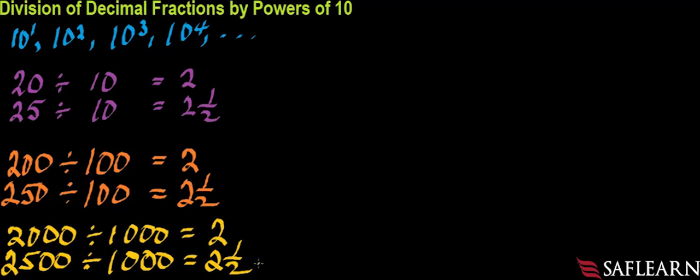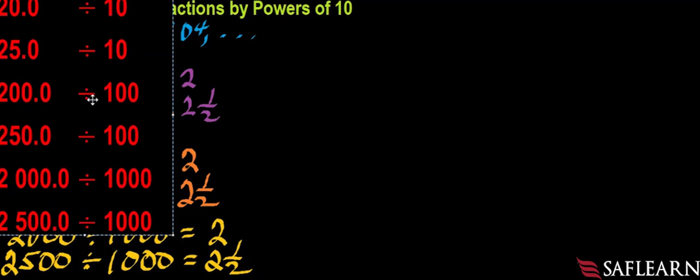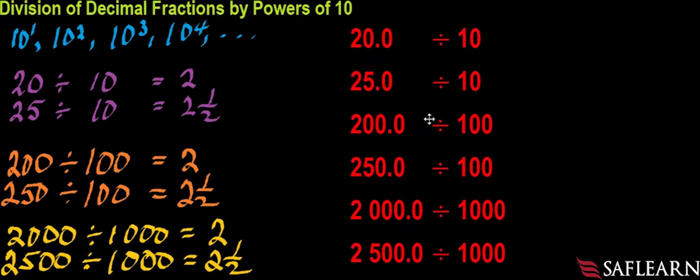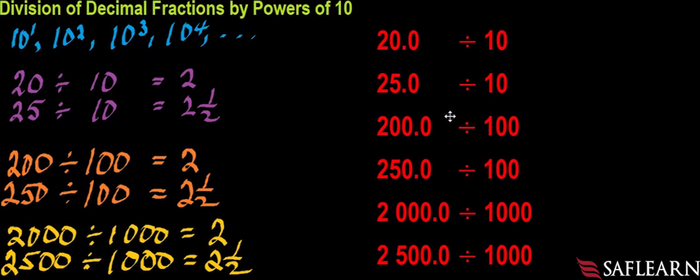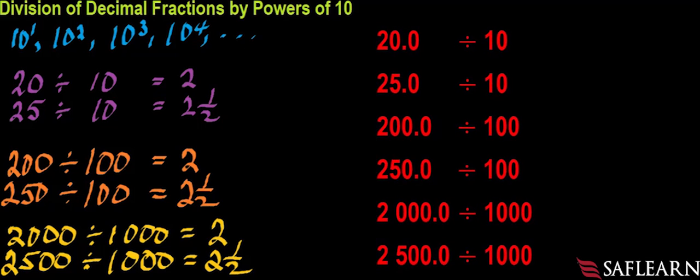But let us take a closer look at these results. Something very interesting for us to observe. Remember that a decimal point can always be inserted after the last digit of a whole number. So, here we have 20 oranges, 20 divided by 10. We can simplify 20.0, and the result is 2.